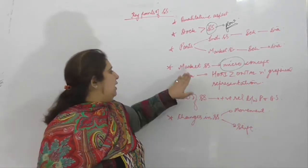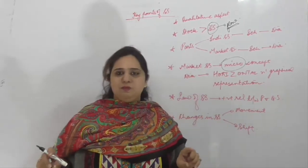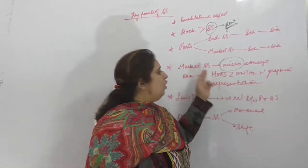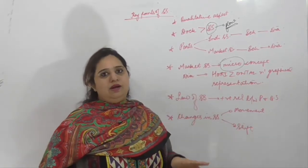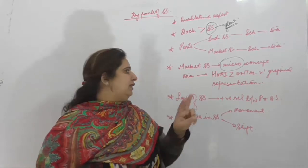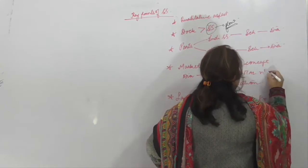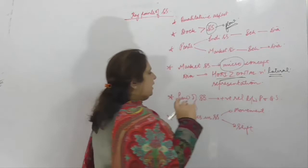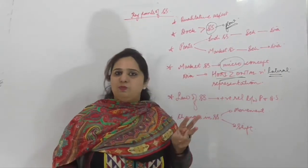Diagram जब आप market supply की बनाओगे, एक ही line में तीनों diagrams बना लीजिए। यहाँ पर जो last fourth diagram होगी वो horizontal summation — जिसे lateral summation भी कहते हैं — से बनती है of two individual supply curves. Never forget: horizontal summation, also known as lateral summation।